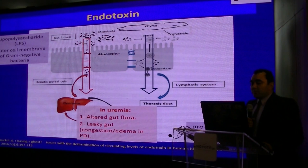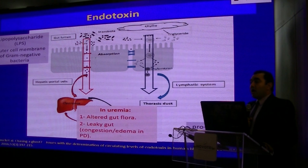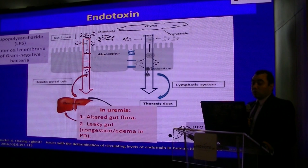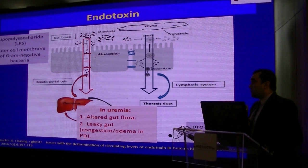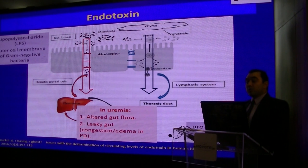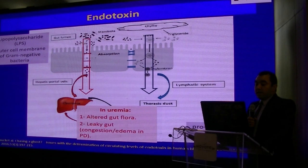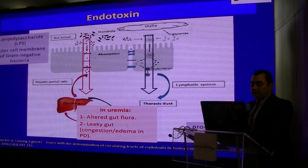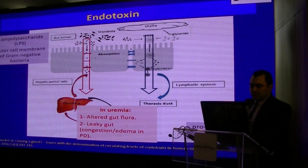The problem is larger in uremic patients, where there is altered gut flora and even the duodenum and jejunum, which are normally not colonized by bacteria, become colonized in uremic patients. Also, the gut becomes leaky and the intestinal barrier can be easily crossed by bacteria in peritoneal dialysis patients and in patients on hemodialysis. In peritoneal dialysis patients, the gut is congested and edematous — the gut is immersed in dialysis fluids. In hemodialysis patients, the gut undergoes recurrent episodes of ischemia, so the intestinal barrier becomes impaired.